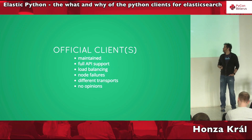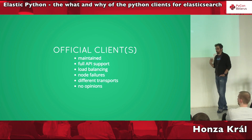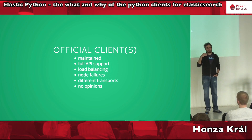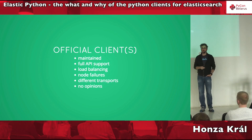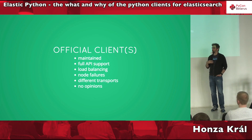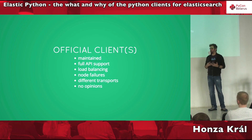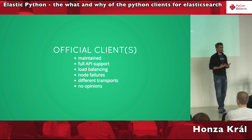You also want to be able to do load balancing, handle node failures gracefully, and support different transports because every environment is different. Some people use a load balancer and talk to Elasticsearch through it — in that case the client shouldn't do its own load balancing. Sometimes you have a proxy in the middle to authenticate against. One of my favorites is Google App Engine, which restricts what you can do with HTTP and sockets, so we need to use alternative transport methods.